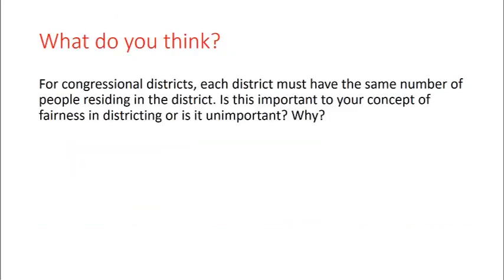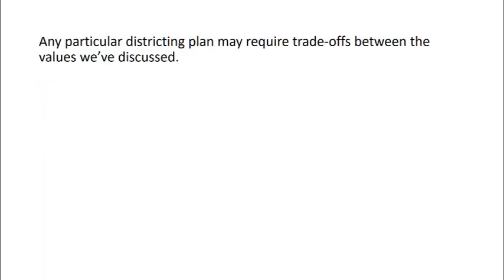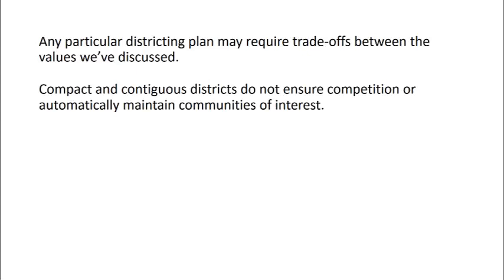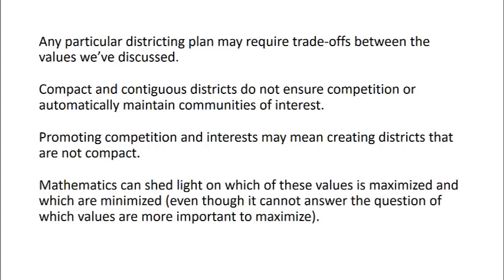So what do you think? For congressional districts each district must have the same number of people — that's the equal representation principle we talked about first. Is this important to your concept of fairness in districting, or is it unimportant? Of the values discussed — equal representation, contiguity, compactness, electoral competition, and maintaining communities of interest — which of these concepts of fairness are important to you and why? Now any particular districting plan may require trade-offs between these values. Compact and contiguous districts do not ensure competition or automatically maintain communities of interest, and promoting competition and interest may mean creating districts that are not compact. Mathematics can shed light on which values are maximized and which are minimized, even though it cannot answer the question of which values are more important to maximize.